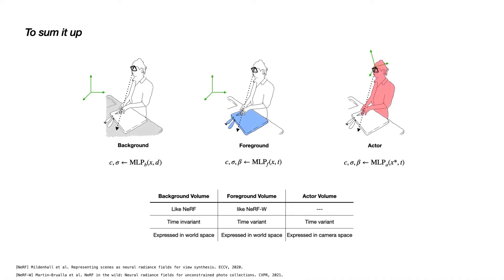To sum up the overall architecture, our background model is based on NeRF and does not capture time. The foreground model is more related to NeRF-W and is time variant. The actor model is also time variant, but is expressed in the camera space in comparison to the other two models.